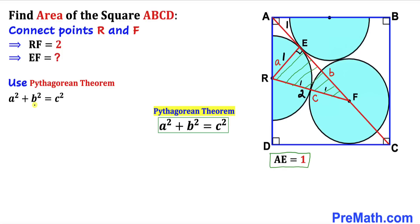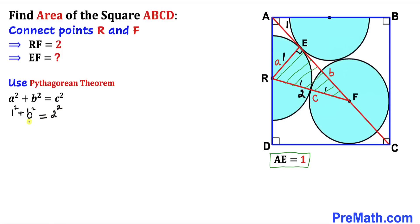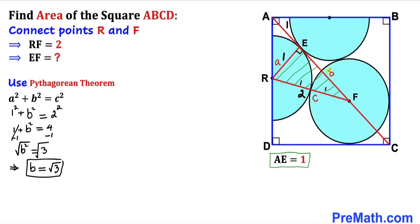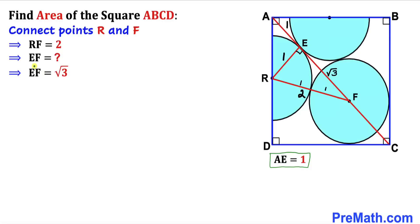In the Pythagorean formula A² + B² = C², side A = RE = 1, so 1² + B² = 2², giving 1 + B² = 4, so B² = 3. Taking the square root, B = √3. Therefore length EF = √3.